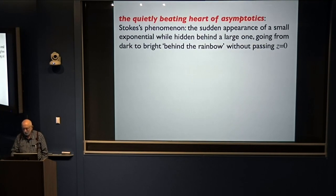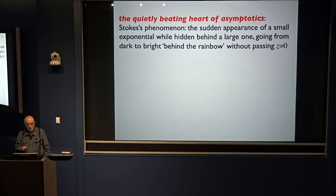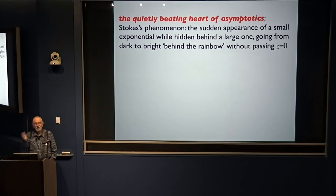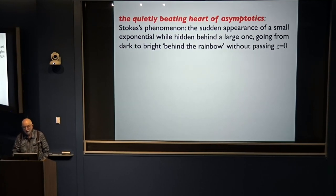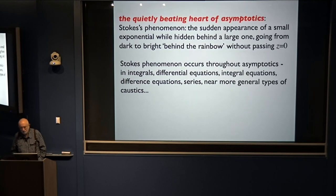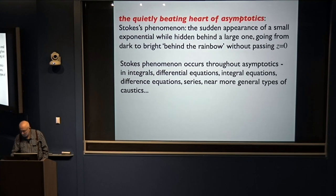This is the quietly beating heart of asymptotics. It's called the Stokes phenomenon. It's a sudden appearance of a small exponential hidden behind a large one, going from the dark to the bright — sort of behind the rainbow — without passing the origin in the complex plane. It occurs throughout asymptotics: in integrals, differential equations, integral equations, difference equations, series, also near more general types of caustic.